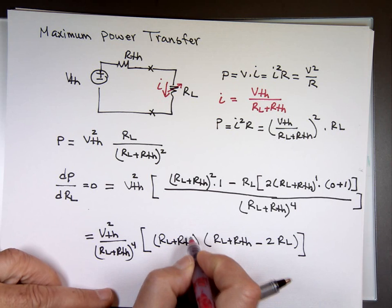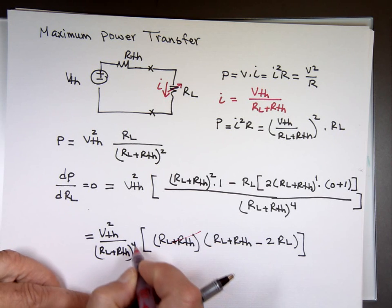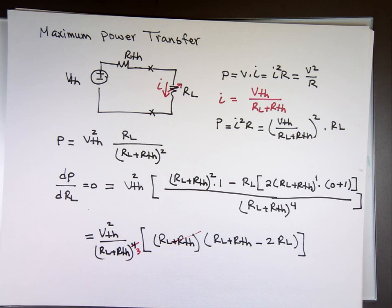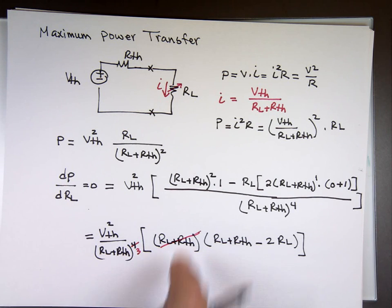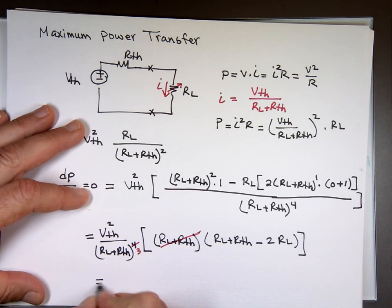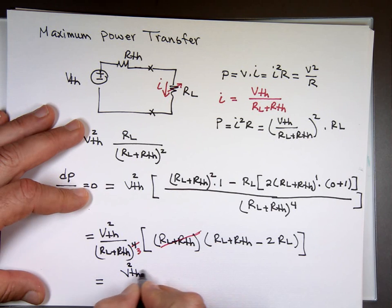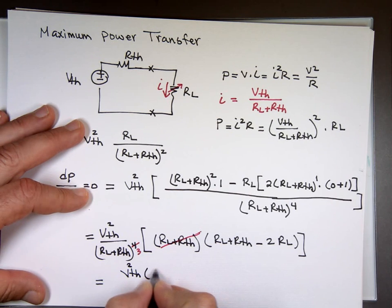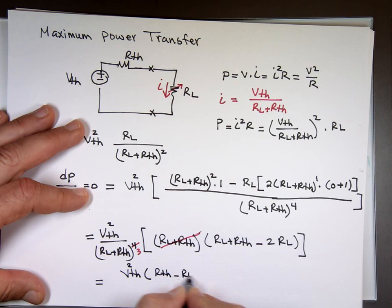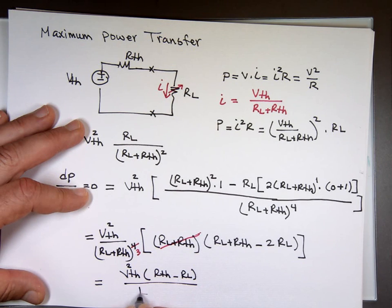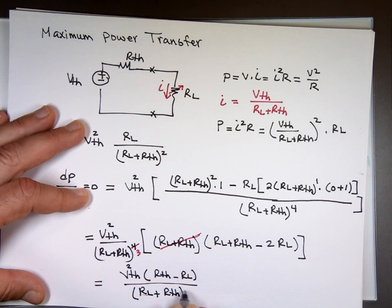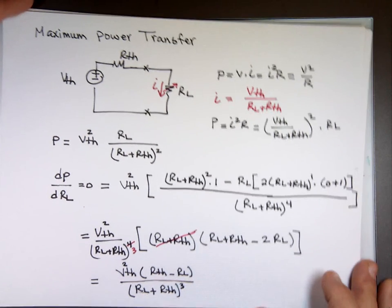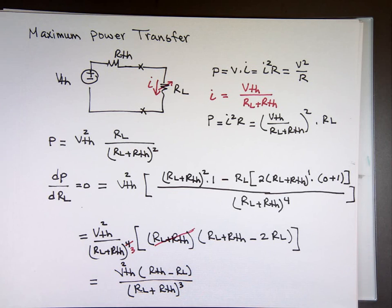This one here cancels one of the bottom, makes that a three instead of a four now. That's the same thing. You see it? R L plus R Thevenin. So it cancels one of these. So I have V Thevenin squared times R Thevenin minus R sub L over R L plus R Thevenin to the third power.